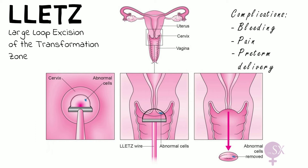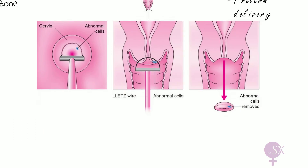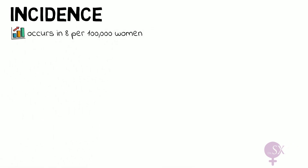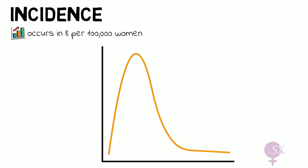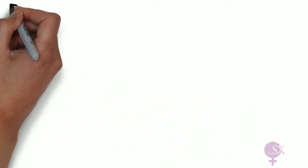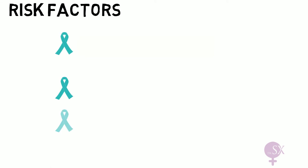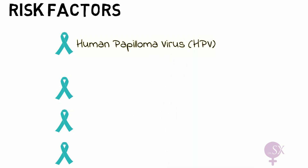Back to our discussion on cervical cancer: it occurs in 8 per 100,000 women. It can occur at any age, but there are two main peaks of incidence. As you can see from the graph, there is a main peak at around age 30 and another peak at age 80.